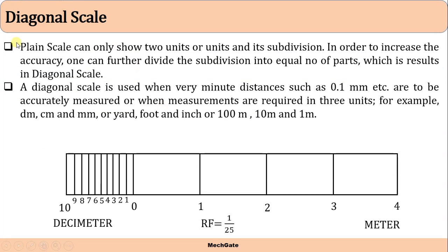A plane scale only represents two units or a unit and its subdivision, like meter and decimeter, or kilometer and hectometer, or centimeter and decimeter. In order to increase the accuracy, one can further divide the subdivision into equal parts — by dividing one decimeter into equal parts using a diagonal line, which results in a diagonal scale.